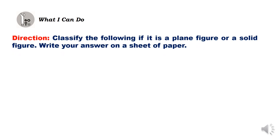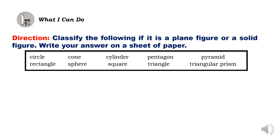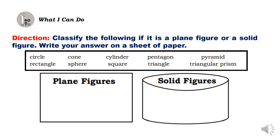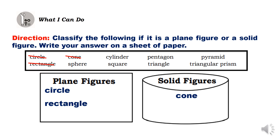Classify the following as a plane figure or a solid figure. Write your answer on a sheet of paper. A circle is a plane figure. A cone is a solid figure. A rectangle is a plane figure. A sphere is a solid figure.